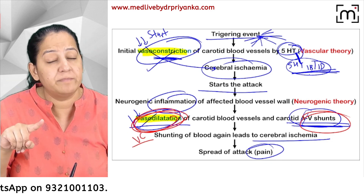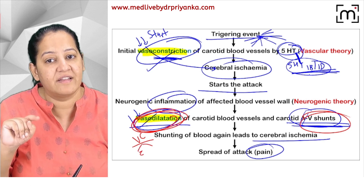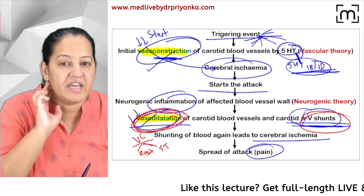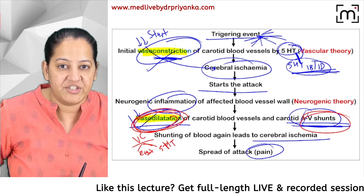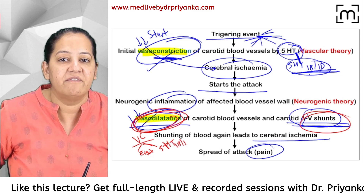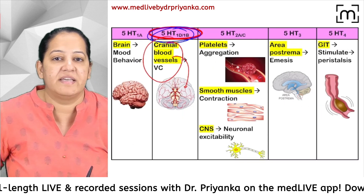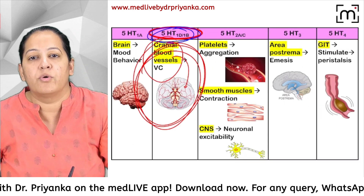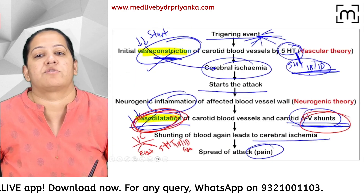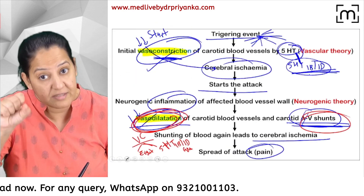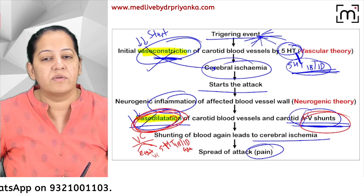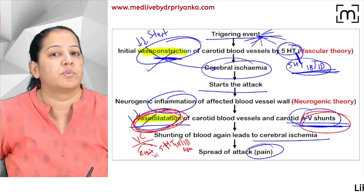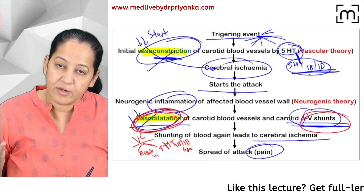The main drugs that cause vasoconstriction are ergot and triptans. Triptans are 5-HT 1B/1D agonists. These drugs cause vasoconstriction. Ergot also causes vasoconstriction because it is an agonist on alpha receptors as well. So these two drugs are used in the treatment of migraine.